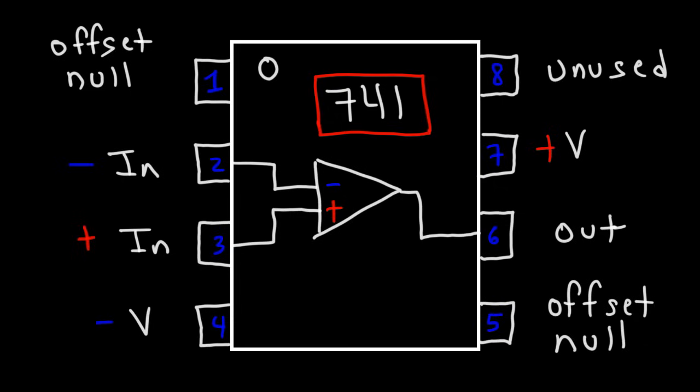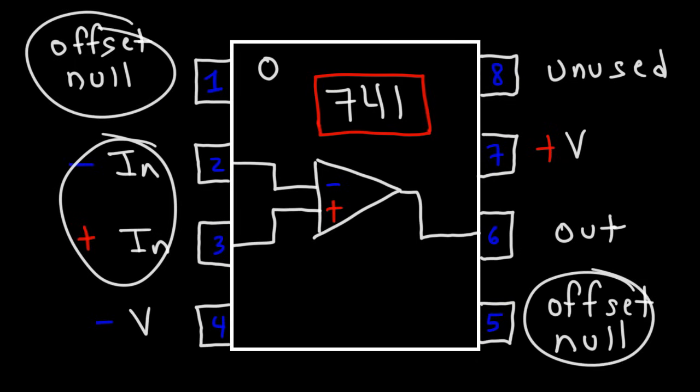Number 8 is unused and 1 and 5 are the offset null pins. Even if there's no signal applied at the input, the operational amplifier can still generate an output voltage and this is known as the output offset voltage. And so you could use these pins to set the output offset voltage to zero. But that's another topic for discussion.